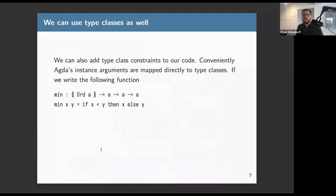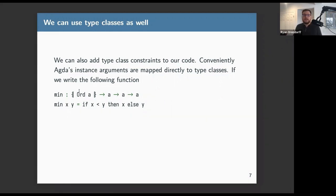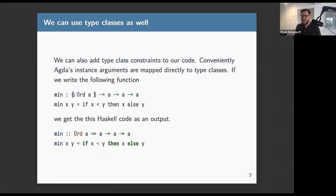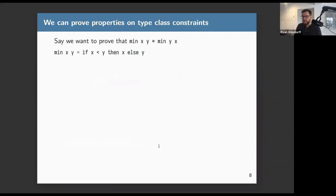Agda2hs also supports type classes. In Agda, they're called instance arguments. For example, a minimum function takes two arguments and returns the smaller one: if x < y then x else y. This is in the Ord type class. Agda uses curly braces for the instance argument constraint, similar to a type class constraint in Haskell. When run through agda2hs, the output is standard Haskell with an Ord constraint, just as you'd expect.